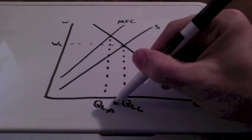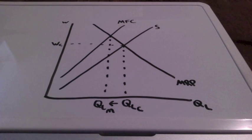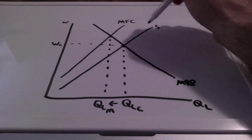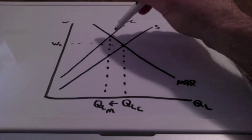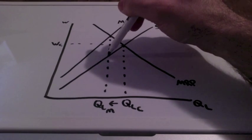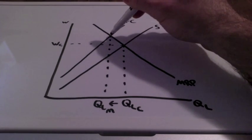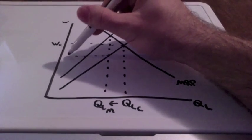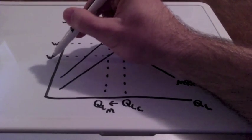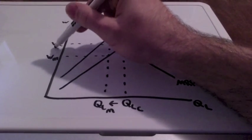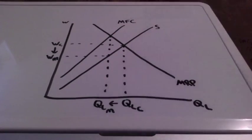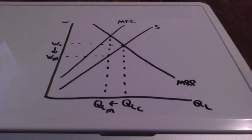As you can see, QLM is significantly less than the socially optimal level. The wage that the monopsony is going to pay their workers is where this intersection meets the supply curve — we bring this all the way down and over to the wage. This is WM. Wages are significantly lower and the quantity of labor is also lower.